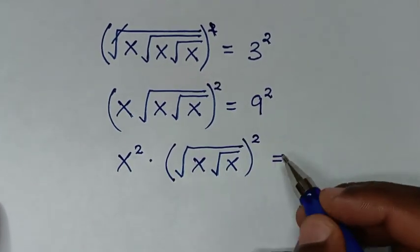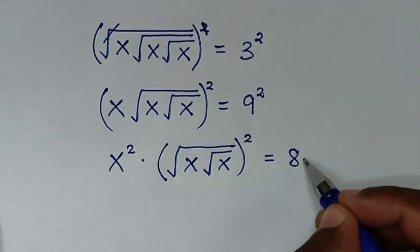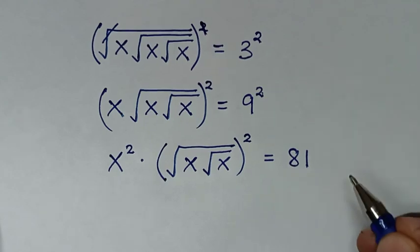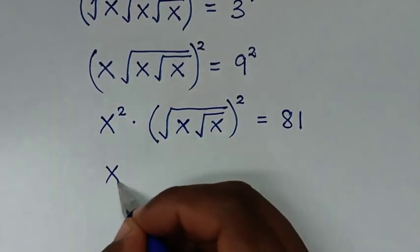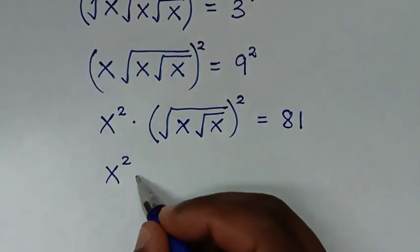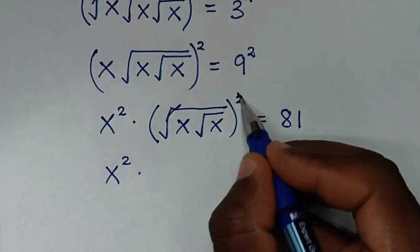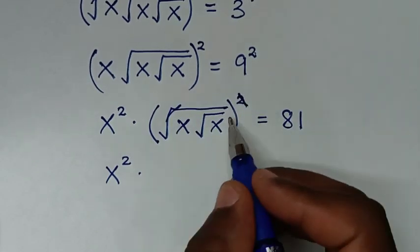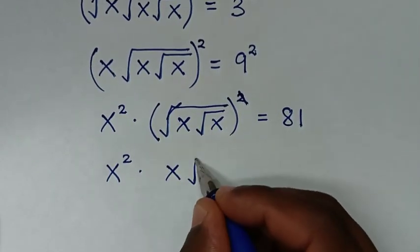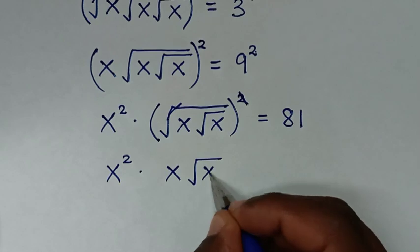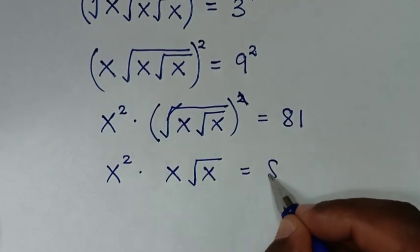That equals 9 squared, which is 81. In the next step, x squared times this square root will cancel with this square, giving us x squared times square root of x, equal to 81.